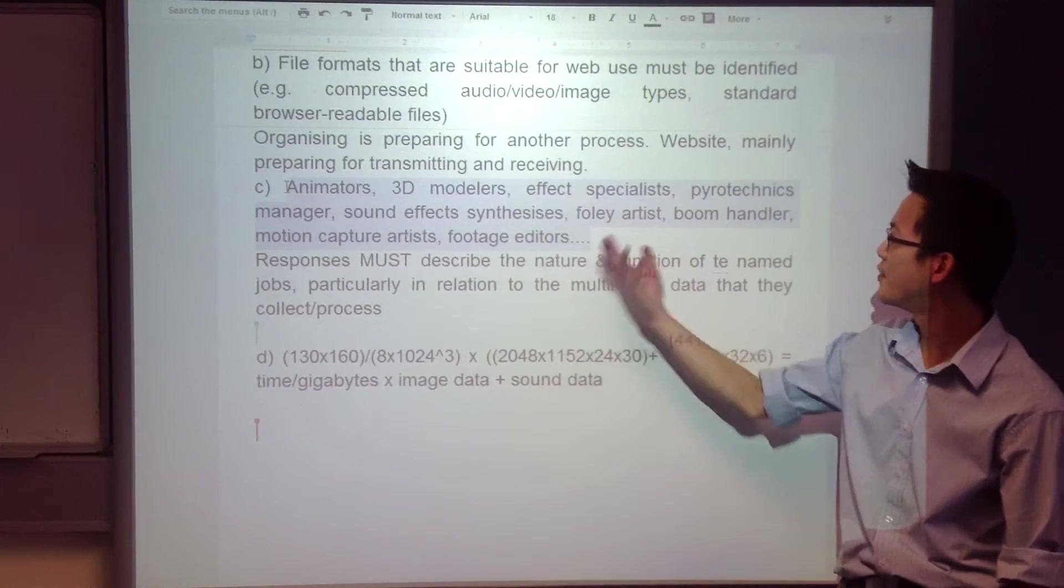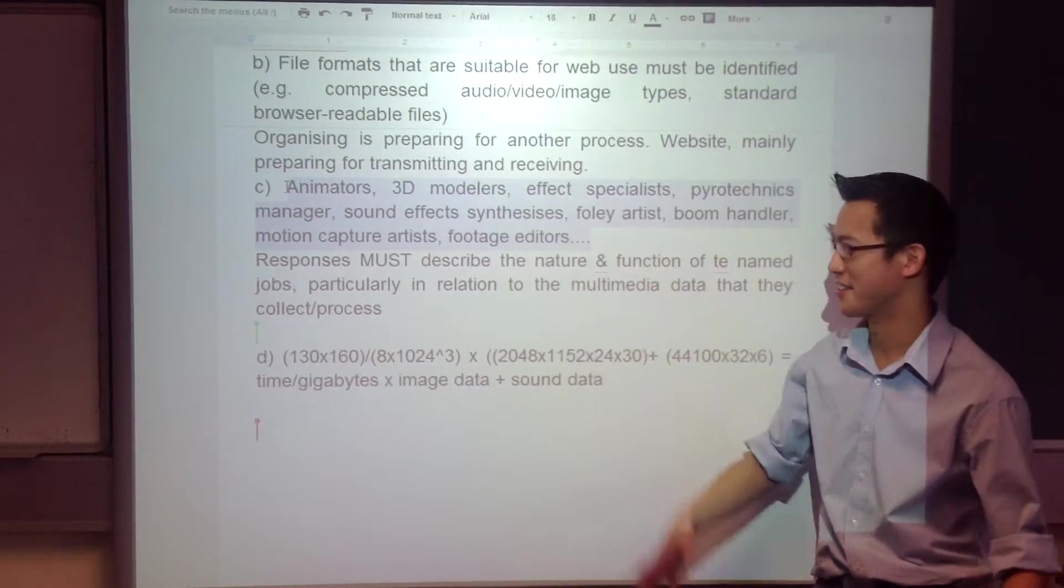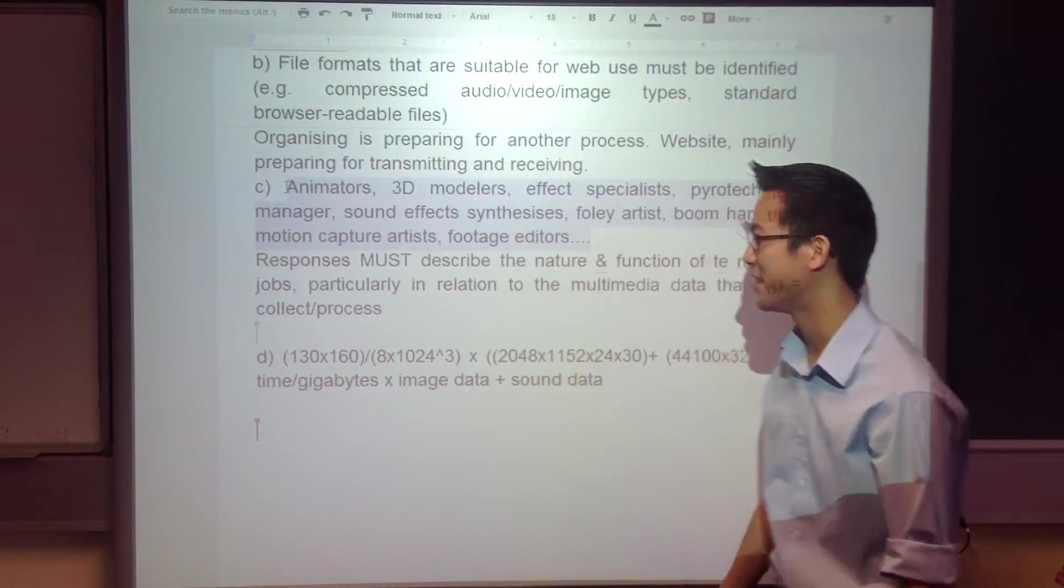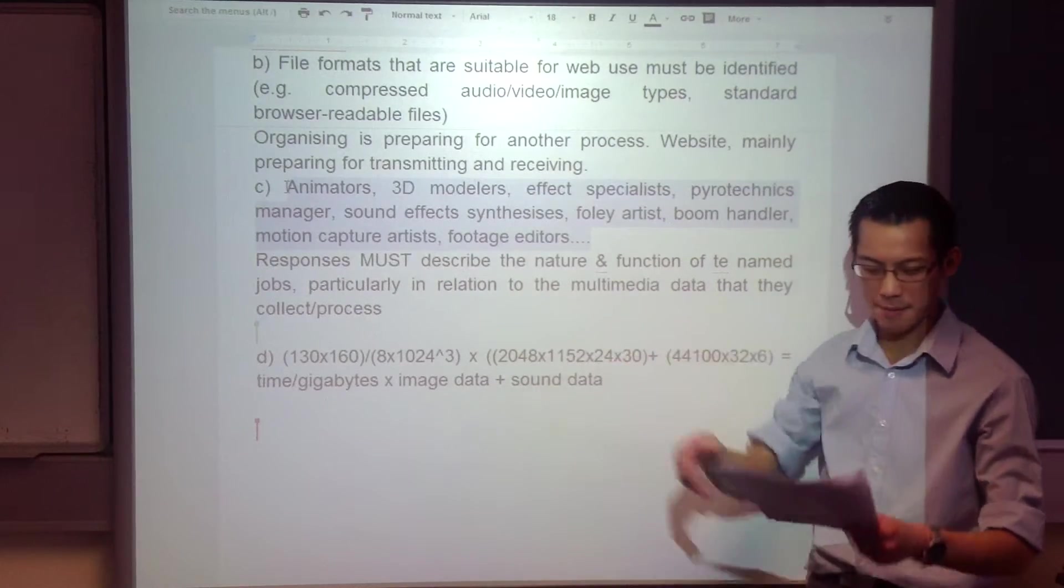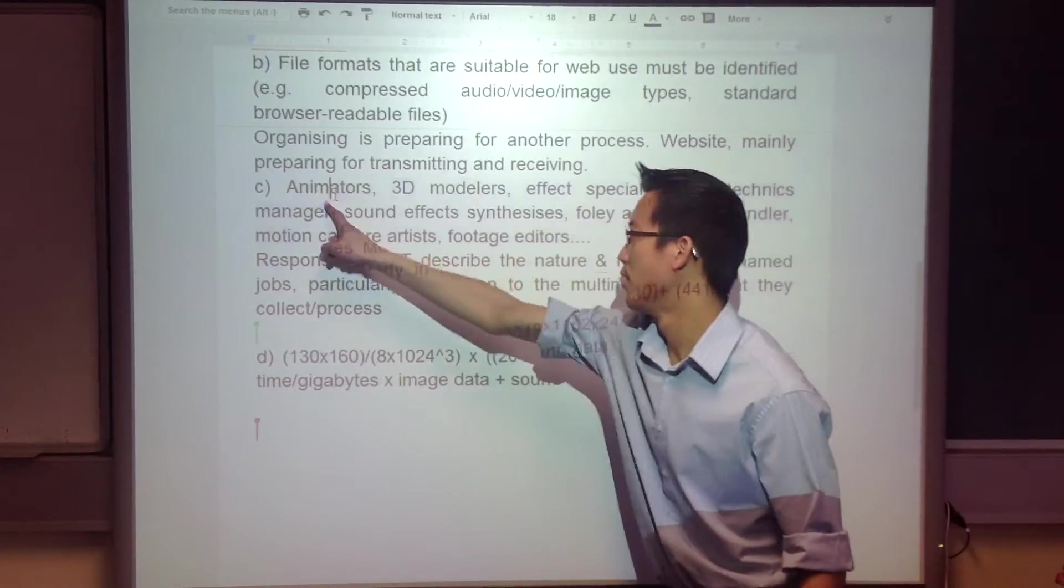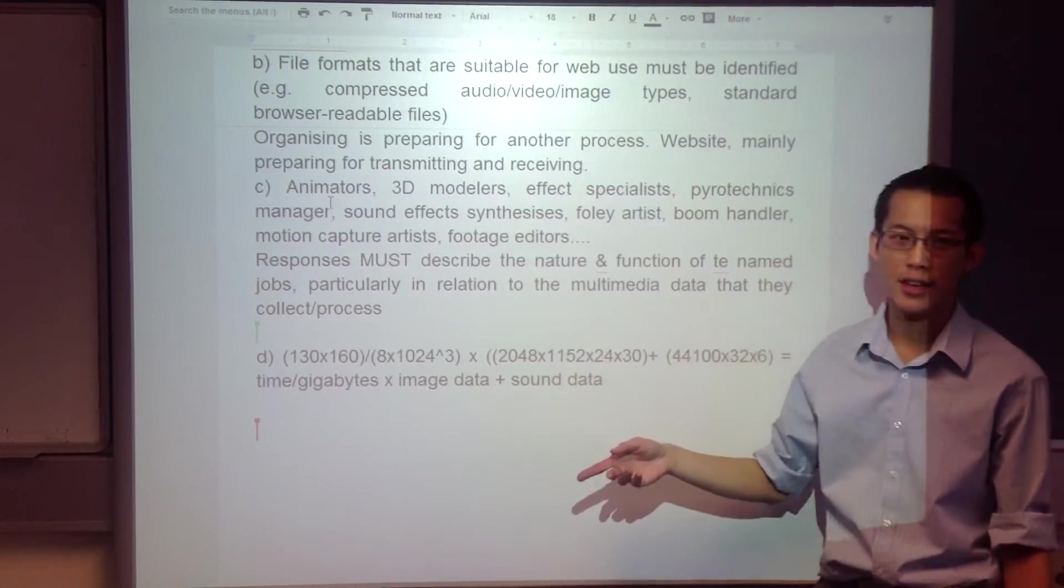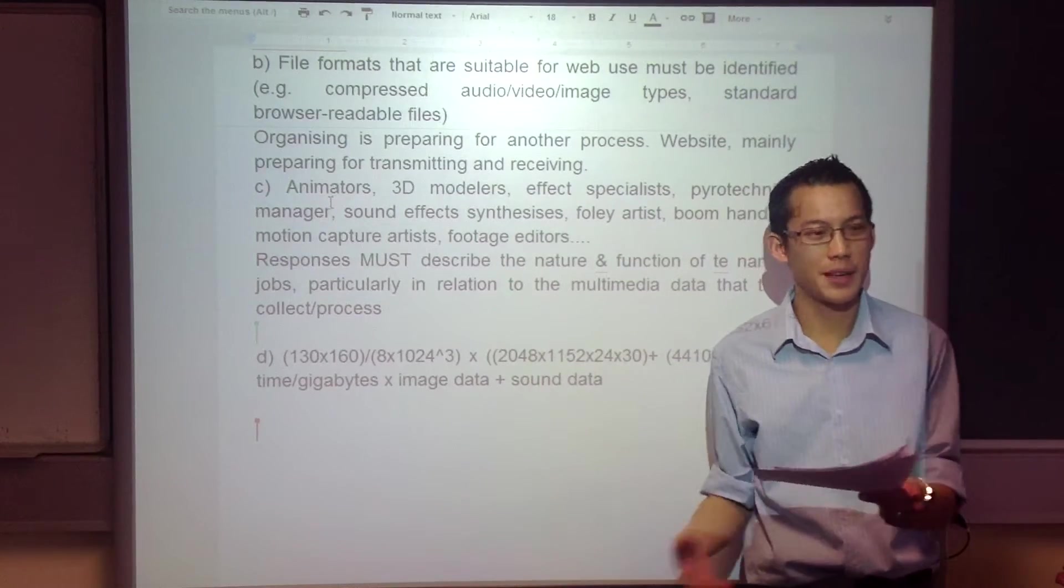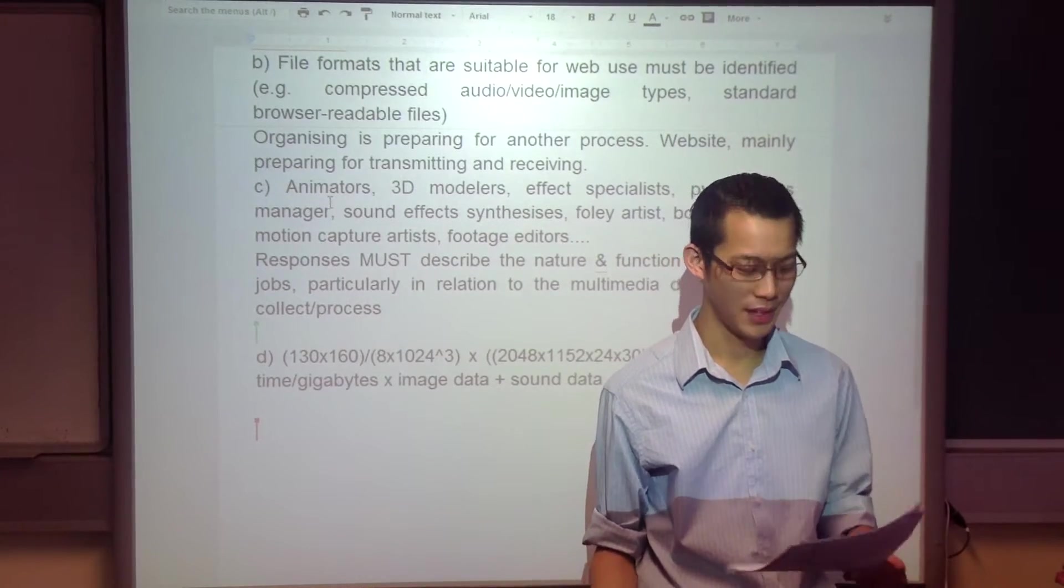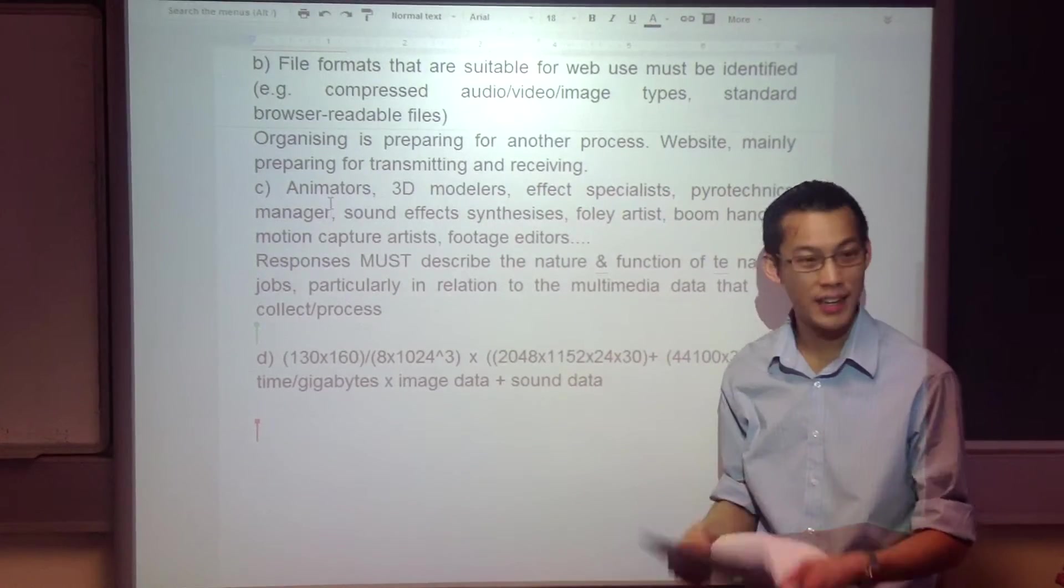Animators, 3D modelers, effects, pyrotechnics, sound effects, Foley - a lot of people said Foley because we spent like half a lesson on it. So if you are looking for two, there's tons, okay? There's plenty here. Now, you had to talk about, because the question says describe, right? Describe the jobs. Don't just tell me, okay, there was a job and I made it up. Full stop, okay? You need to describe the nature and function of those jobs, particularly in relation to the data they produce, because it says specifically related to the production of multimedia components. Okay? So that's what I was looking for to get the full marks. Two for each different role. Any questions on that?